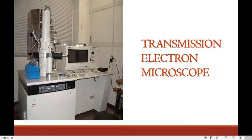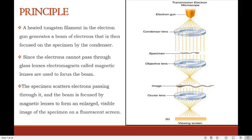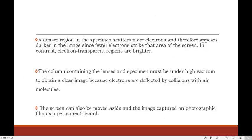In a transmission electron microscope, a heated tungsten filament in the electron gun generates a beam of electrons that is focused on the specimen by the condenser. Since electrons cannot pass through glass lenses, electron magnets or magnetic lenses are used to focus the beam. The specimen scatters electrons passing through it, and the beam is focused by magnetic lenses to form an enlarged visible image on a fluorescent screen. A denser region in the specimen scatters more electrons and therefore appears darker in the image.